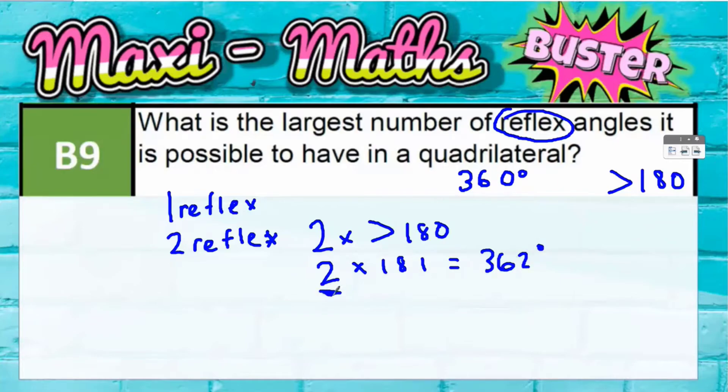Because that's only two angles and a quadrilateral has got to have four angles. So if two of your angles have already taken you over 360, that's not going to work. So you can't possibly have two reflex angles, you can only have one reflex angle.